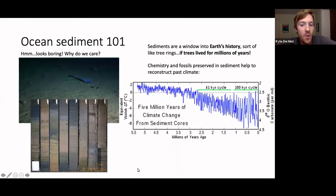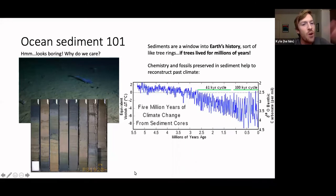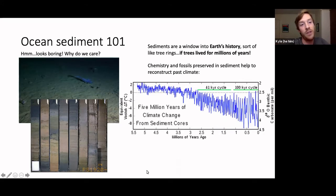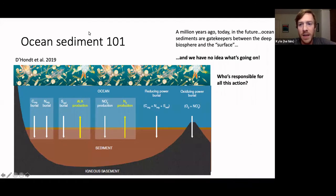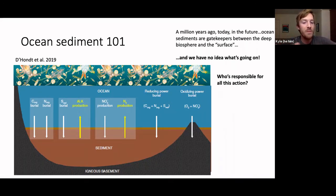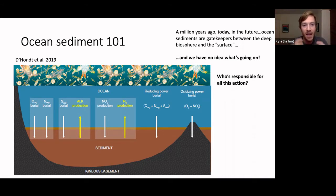That's one reason scientists are interested in ocean sediment as a window into the past, which helps predict how earth will fare with climate change. But even though we can reconstruct what happened 5.5 million years ago, we still have a very limited understanding of the chemical processes happening in that sediment right now — throughout the entire sediment column. This matters because the sediment layer in the earth's crust acts as a gatekeeper controlling the chemistry between the surface ocean and the deep subsurface.